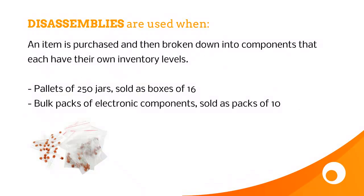Disassemblies are pretty much the same as an assembly but the other way around — typically when you're buying in bulk and selling in smaller quantities. You'd use disassemblies when you want to track stock of both the bigger bulk item and also the smaller items. For example, buying pallets of 250 jars which are then sold as boxes of 16. You'd reduce the quantity of the pallet and increase the quantity of the boxes. For electronic components, you might buy packs of 1,000 and break them down into smaller packs of 10, maybe adding some branding or packaging.